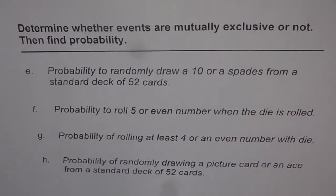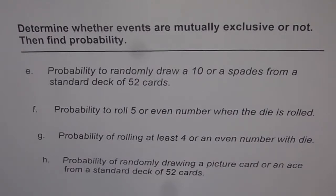Part F is the probability to roll a 5 or an even number when a die is rolled. Part G is the probability of rolling at least 4 or an even number with a die. Part H is the probability of randomly drawing a picture card or an ace from a standard deck of 52 cards. I would like you to pause the video, answer the questions, and then look into my suggestions.